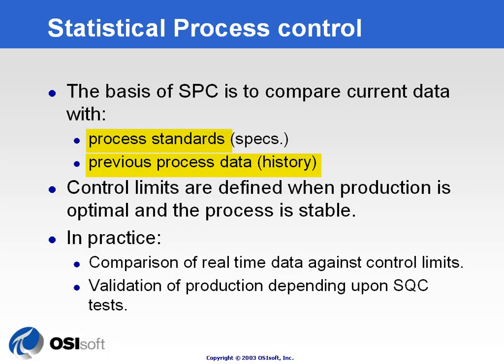Those control limits need to be defined when production is stable and for at least a reasonable amount of time. If you want to go back to a process state where you had good production, it has to be something meaningful from the process standpoint. In practice, you will compare real-time data against those control limits — derived from standard or historical data — and validate your production against statistical quality control tests, checking for the quality of the data.